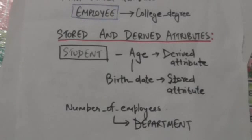Attributes can be derived from related entities. For example, an attribute number of employees of a department entity can be derived by counting the number of employees related to that department.